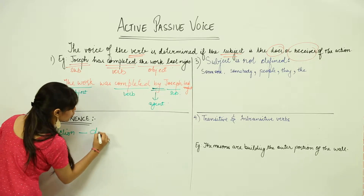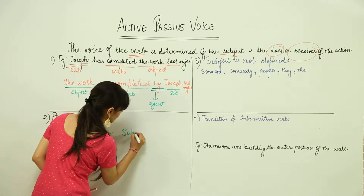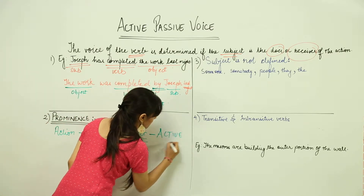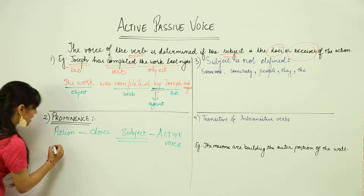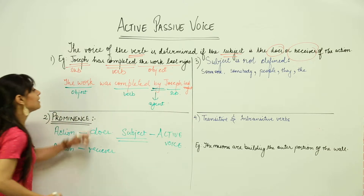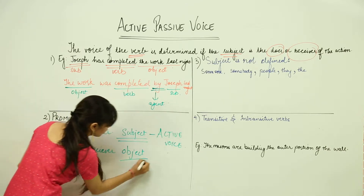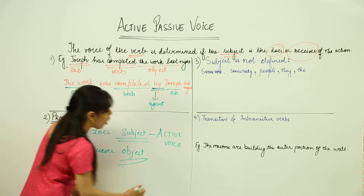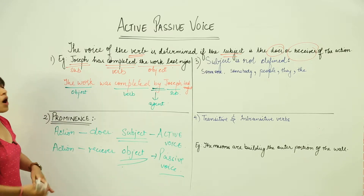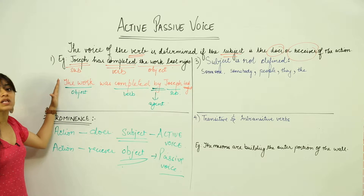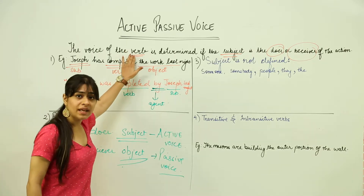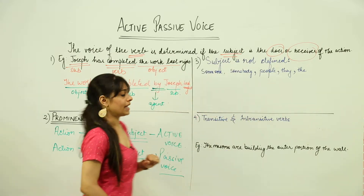Moving on to the prominence concept: if the action doer, that is the subject, is prominent in a sentence, then it is in active voice. If the action receiver, that is the object, is prominent, then it automatically becomes passive voice. We judge a sentence as active or passive by looking at the position of the verb, the subject, or the object in the sentence.